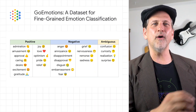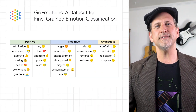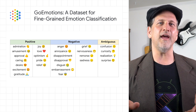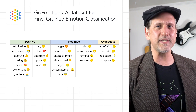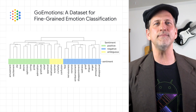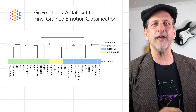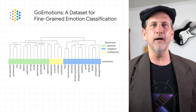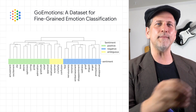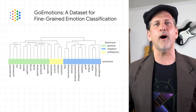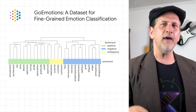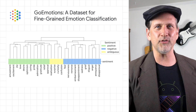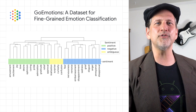We are releasing the Go Emotions data set, a human-annotated data set of 58,000 Reddit comments extracted from popular English language subreddits and labeled with 27 emotion categories — the largest fully annotated English language fine-grained emotion data set to date. It comes with a detailed tutorial that demonstrates the process of training a neural model architecture using Go Emotions and applying it for the task of suggesting emojis based on conversational text. Head on over to the post to learn more.